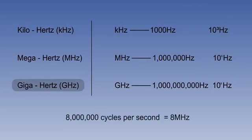So instead of saying that a radio wave has a frequency of 8 million cycles per second, we can now say that it has a frequency of 8 megahertz, written as you see on screen.